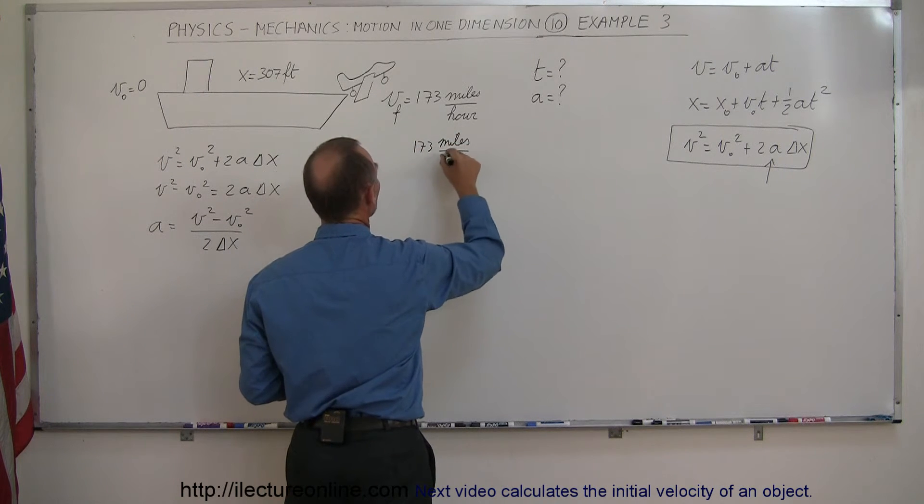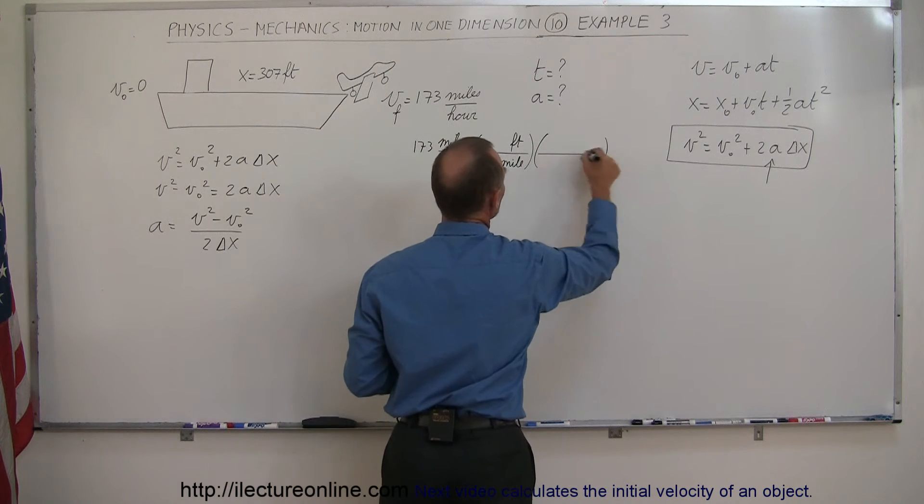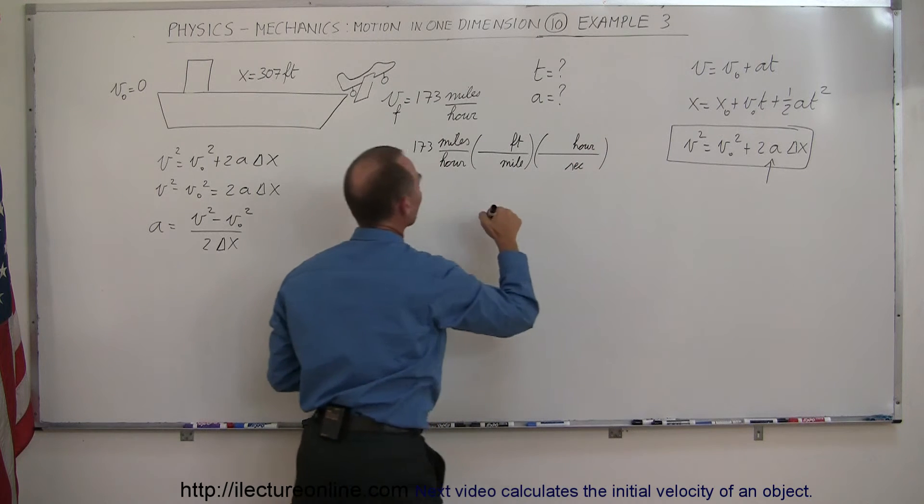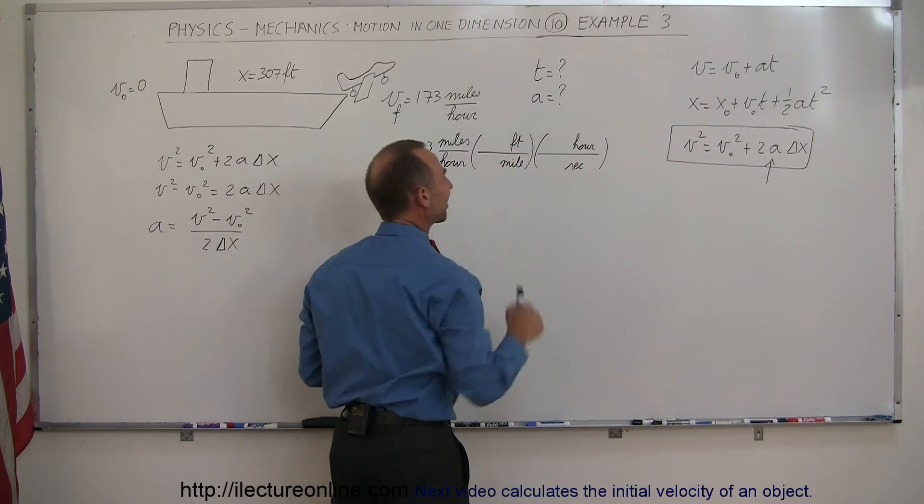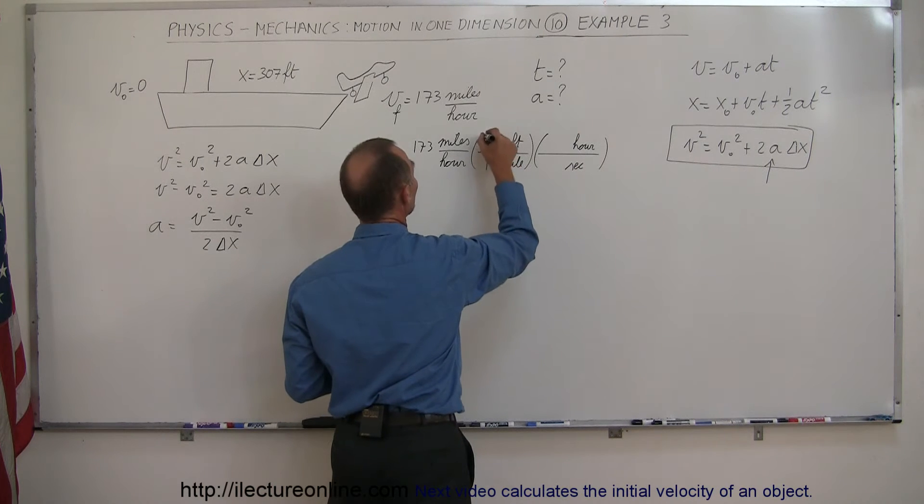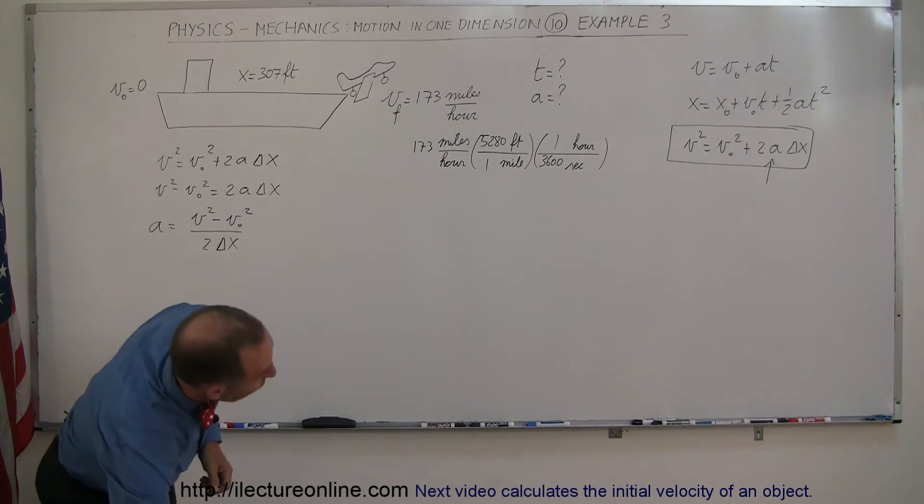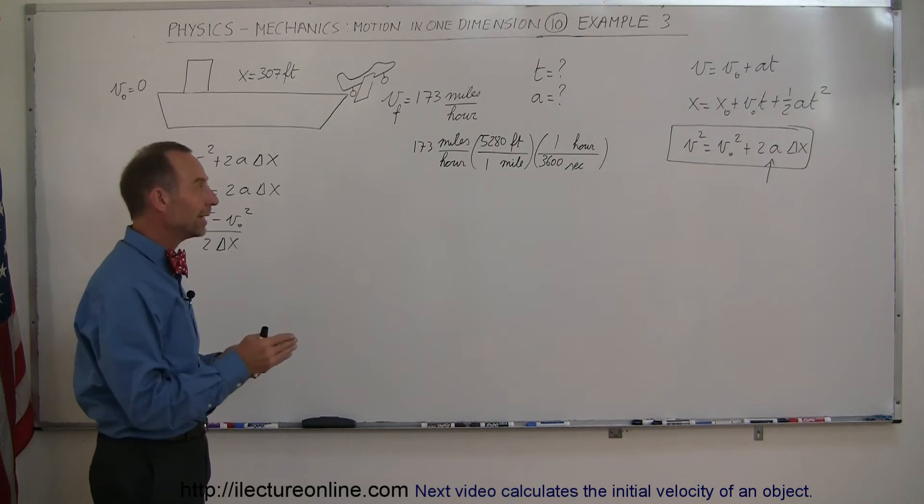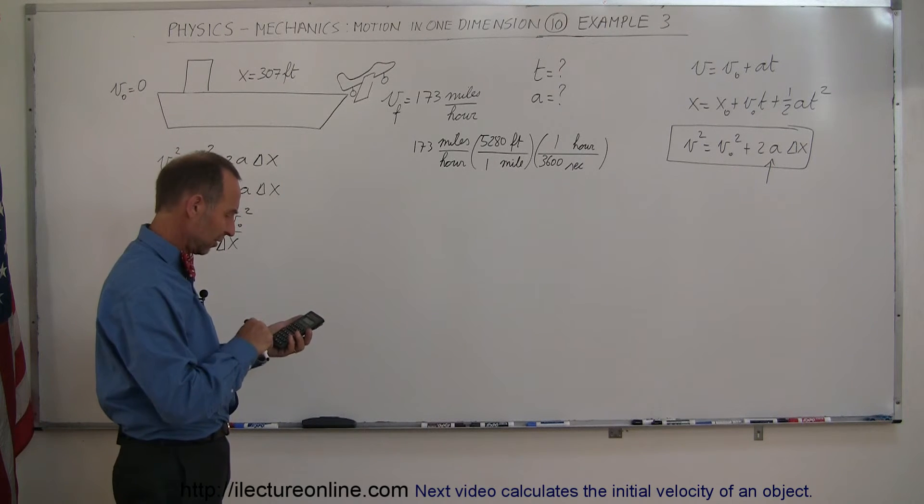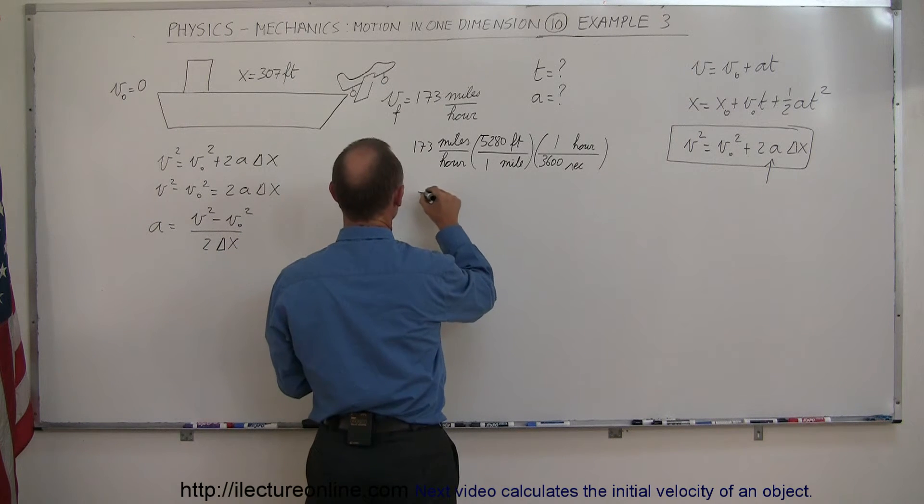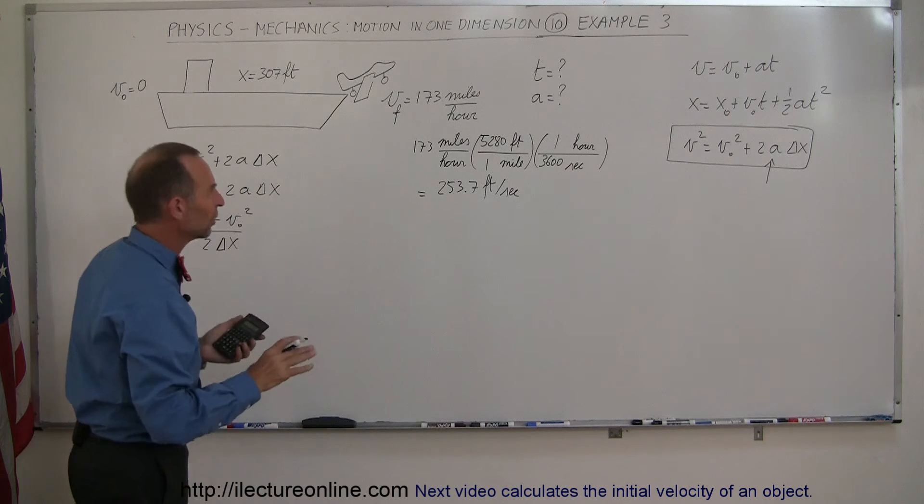173 miles per hour. The first conversion, we want to go to feet per miles. And the second conversion, we need seconds in the bottom instead of hours. So notice, I put miles in the bottom. To cancel out miles, I end up with feet at the top. I put hours at the top so I can cancel and end up with seconds in the bottom. Now we have to have the conversion factor. One mile is 5,280 feet, and one hour is 3,600 seconds. So converting from miles per hour to feet per second, we multiply by 5,280 and divide by 3,600. So 173 times 5,280 divided by 3,600 is, and so that would be equal to 253.7 feet per second. I just kept an extra significant figure so I wouldn't have a roundoff error.